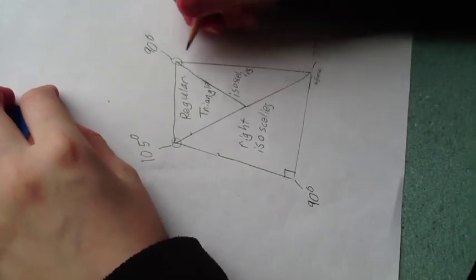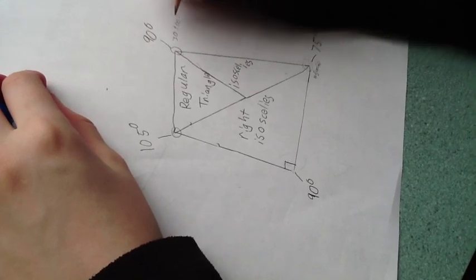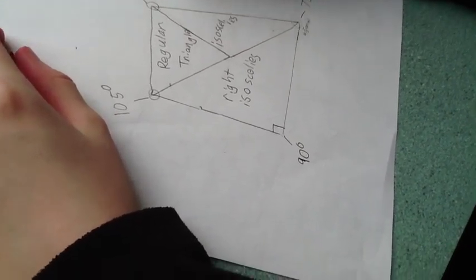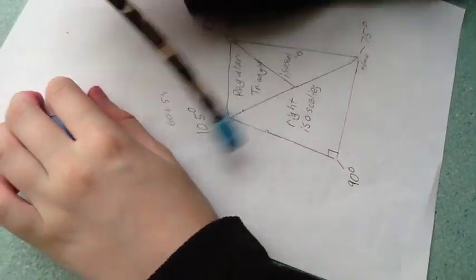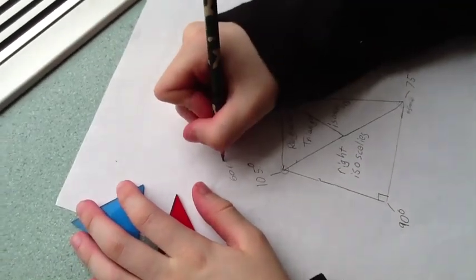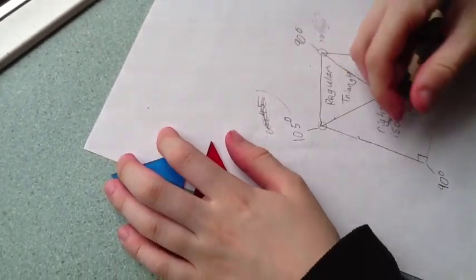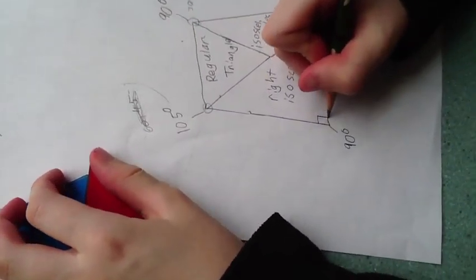This one is 90 because 30 plus 60 equals 90. This one is 105 plus 60 plus 45 equals 105. And that is a 90 degree angle.